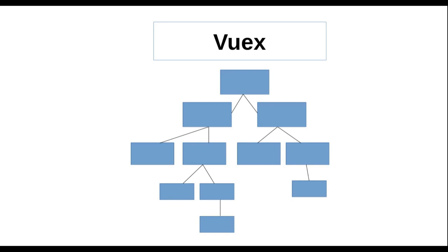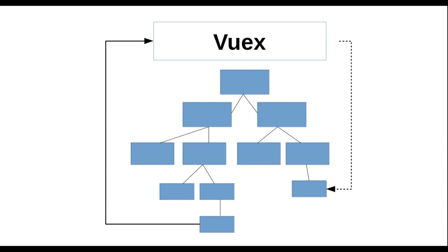To solve this problem, state management is introduced, and this official Vuex library helps us implement state management with ease. In Vuex, we have a single storage of data and it is shared with every component. When a component updates data in the store, it is immediately shared with other components. That makes the codebase much easier because now we don't have the headache of sharing data among components using props or events.